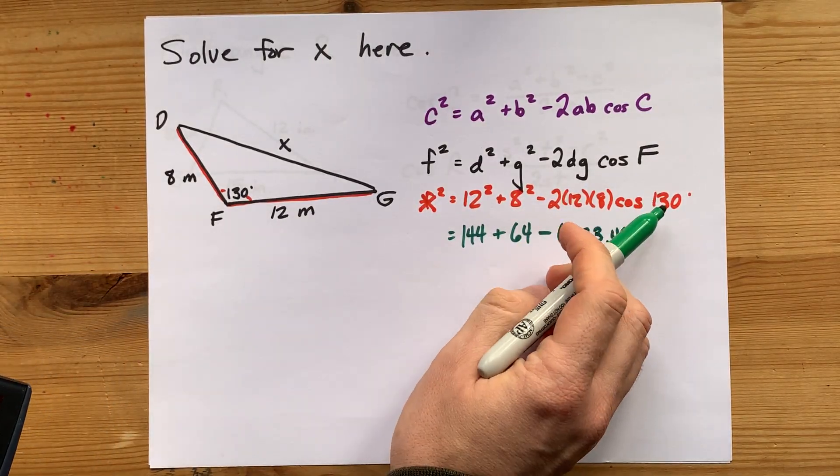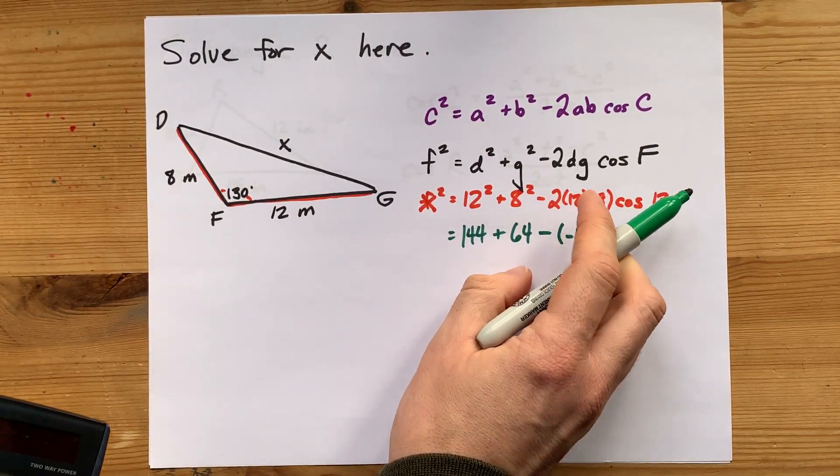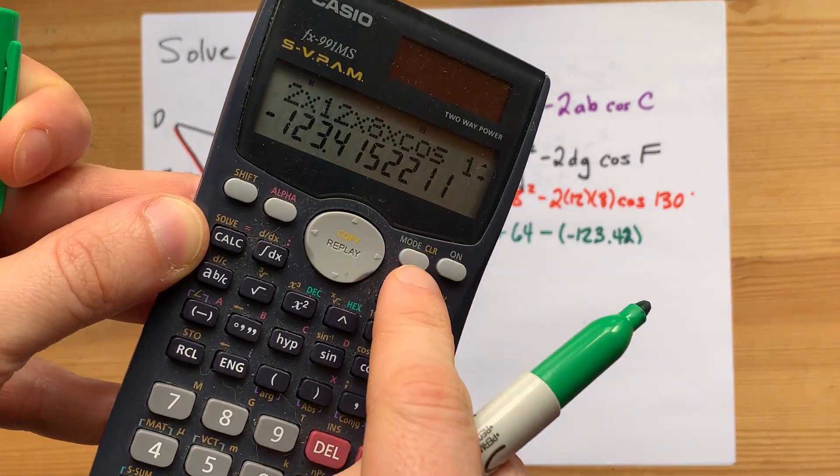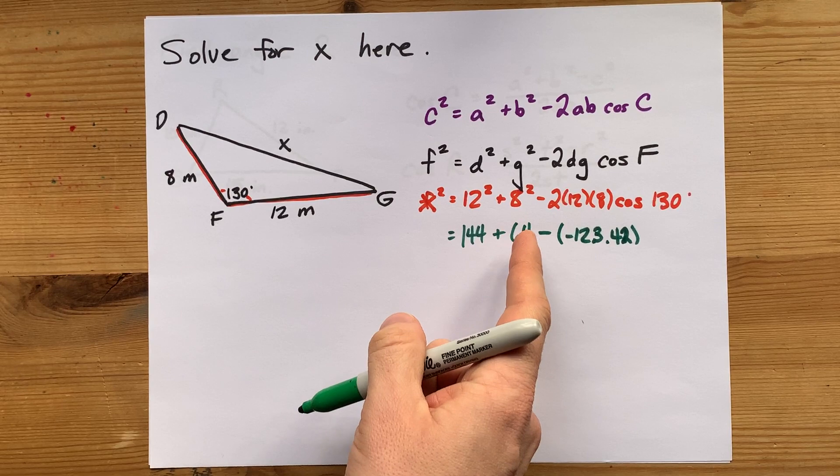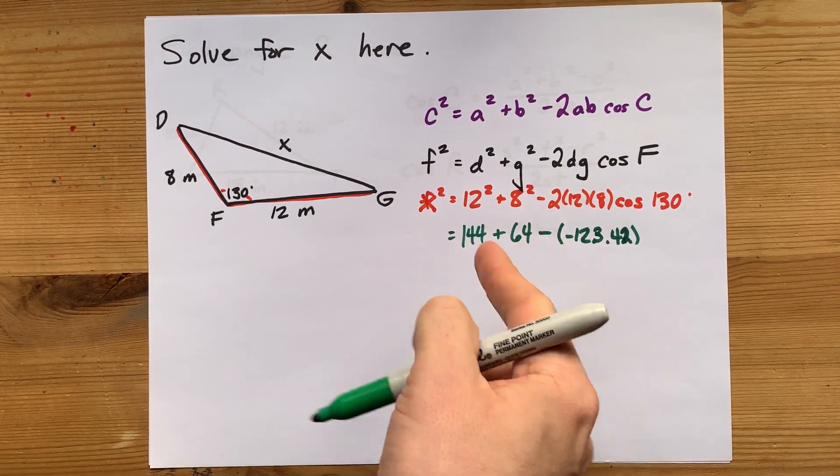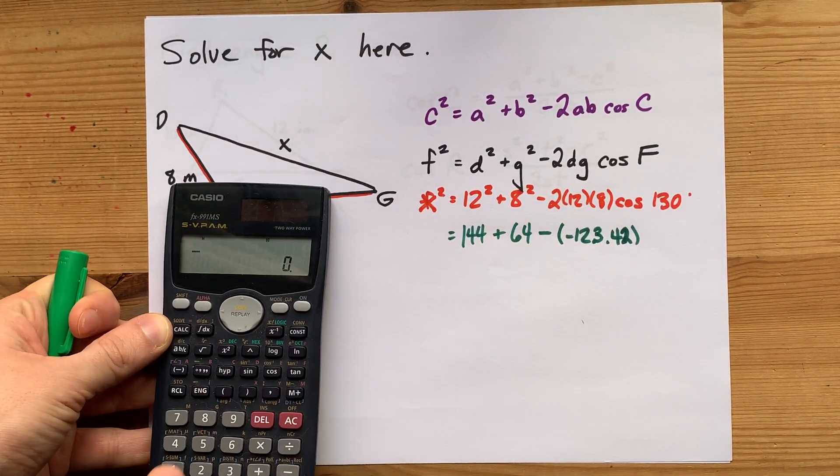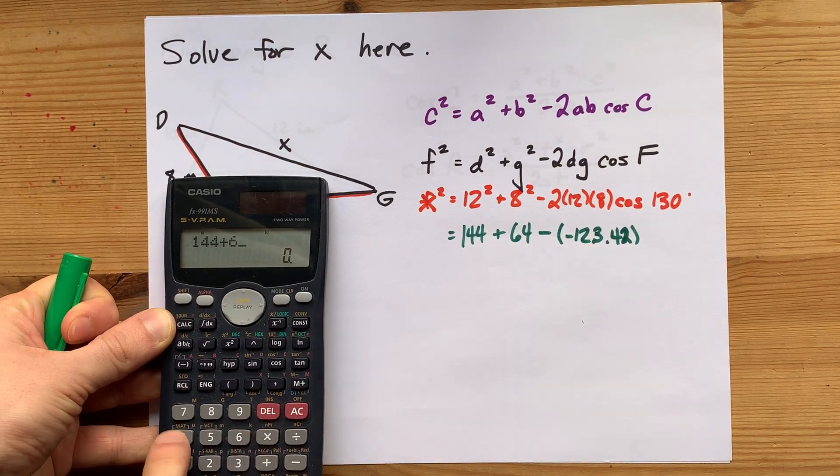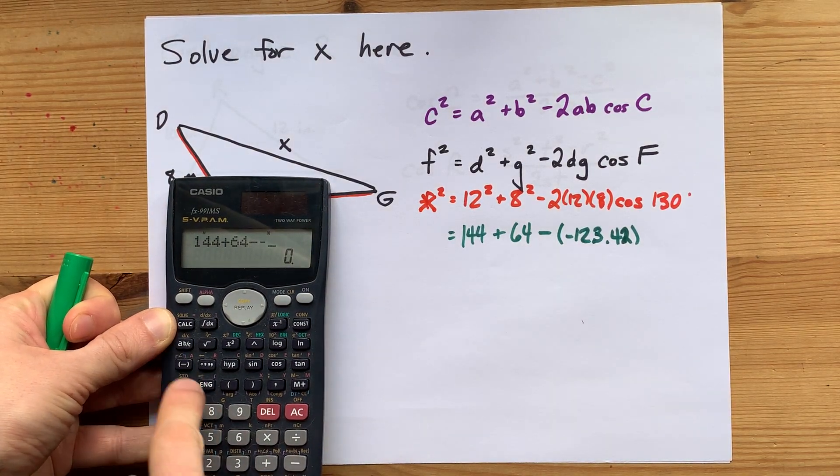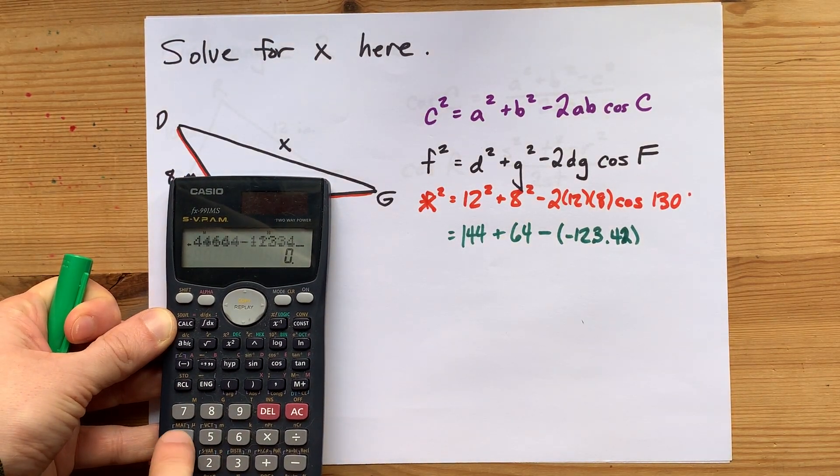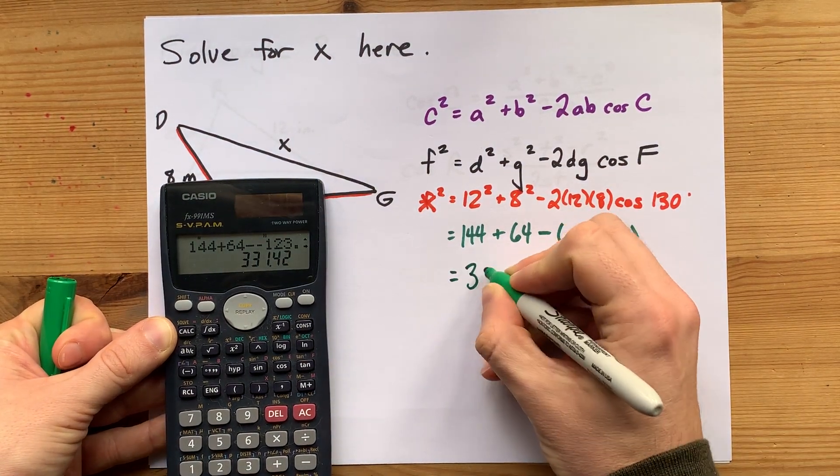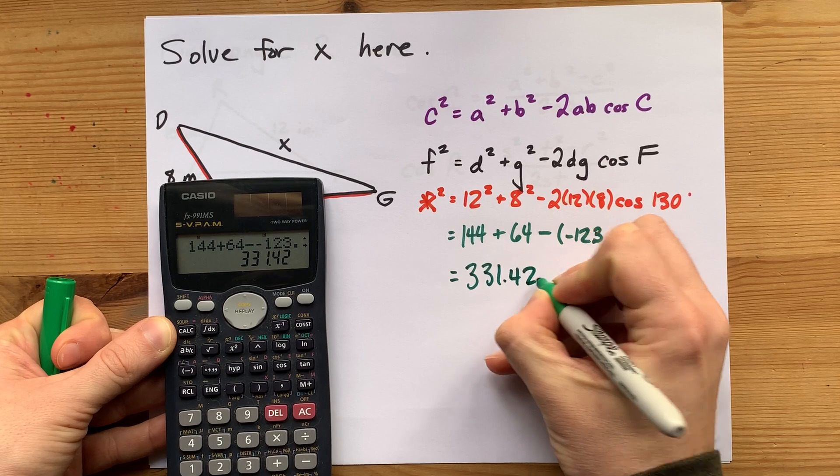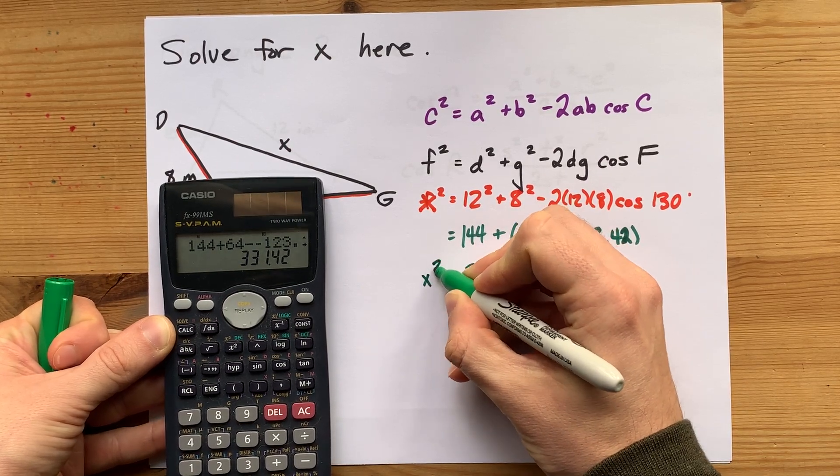I just want to point out that I'm in degree mode on my calculator. If you're not in degree mode, it might say deg or d, then you're going to get the wrong answer because we're using cosine in degrees here. You'll have to change it with your mode button. Subtracting a negative will make the number even larger. 144 plus 64 minus negative 123.42 gives me a total of 331.42, and that is still X squared.